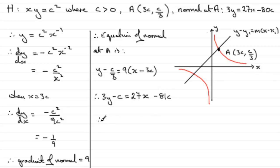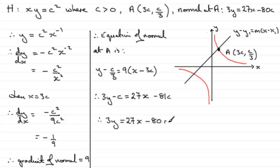All we need to do now is add C to both sides, and we get 3Y equals 27X minus 80C. And that's what we had to show. So that gives you some idea of how to do that part of the question.